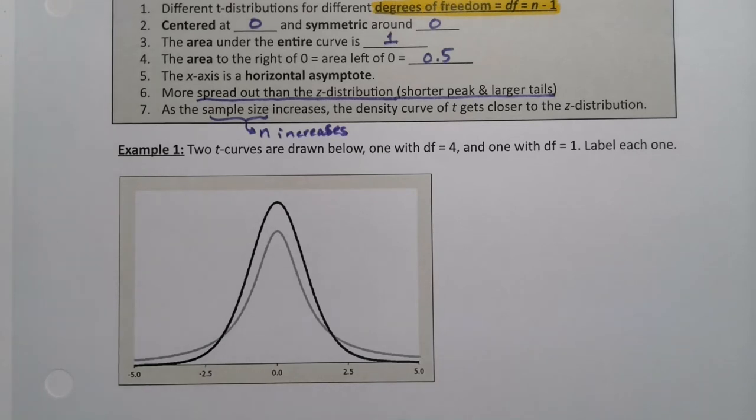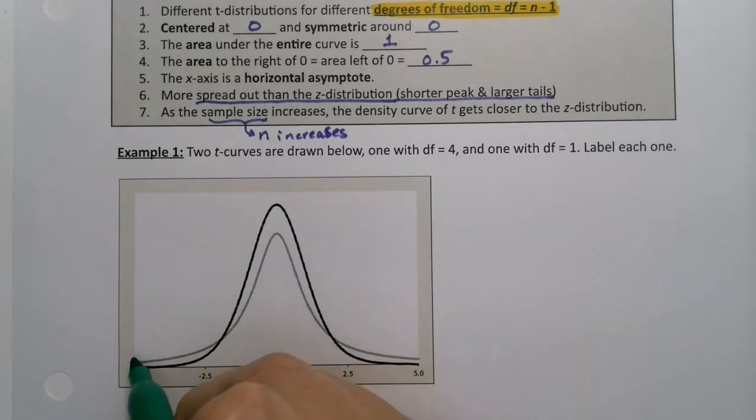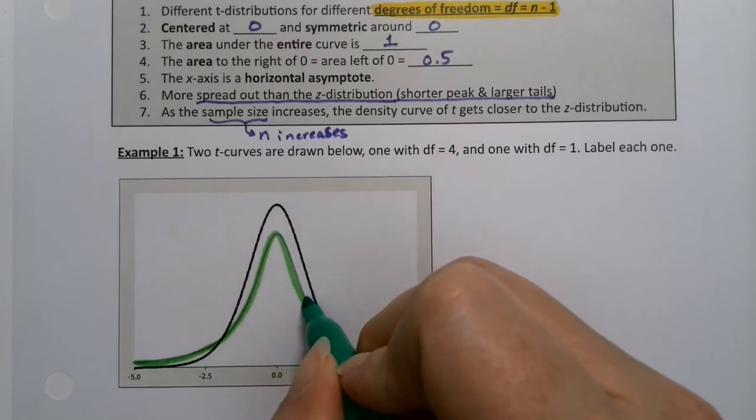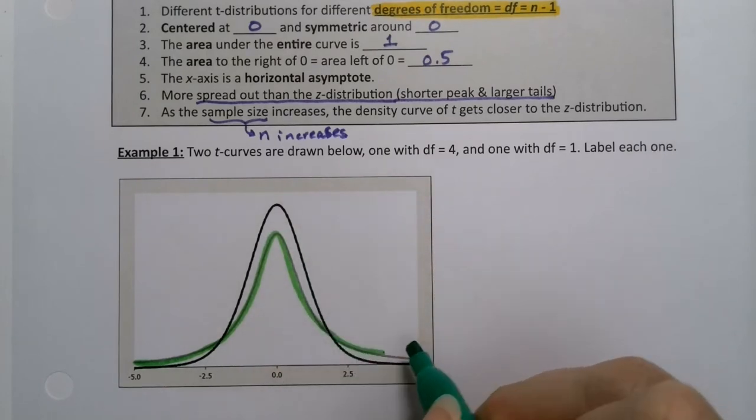That will mean that one of these, the one that's more spread out, will have a lower n. So if I look at this curve right here, I'll color it green right here, that curve has to be degrees of freedom is one because it's more spread out.